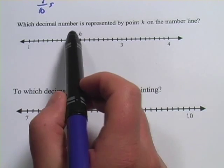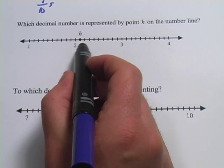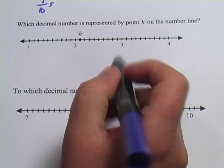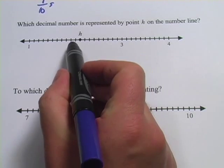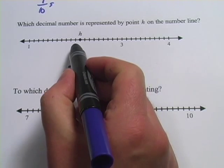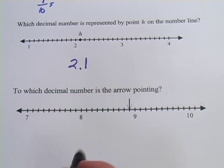The question here says, which decimal is represented by the point H on the number line? Well, H is right here, and it's just a little bit past 2. It's not up to 3, so it's going to be 2 point something, and then I count the number of hash marks after 2, and it's just 1, so that's 1 tenth, or 2.1.